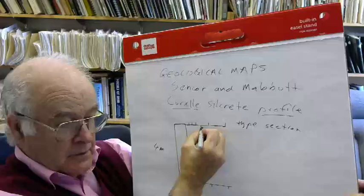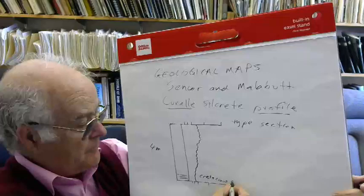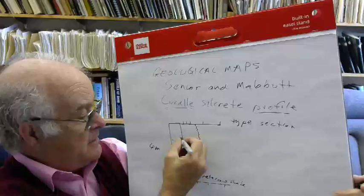They decided to call them just profiles. And so they named the Curelli silcrete profile, for example. They called it a profile. They gave it a locality name. This is what it basically is. And they did a type section. So this was about four meters or so thick, this whole profile now. Sandy at the top, and then going down into mottled material, and then basically Cretaceous shale down here.